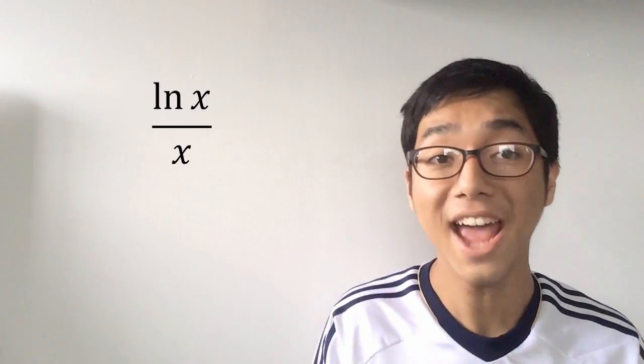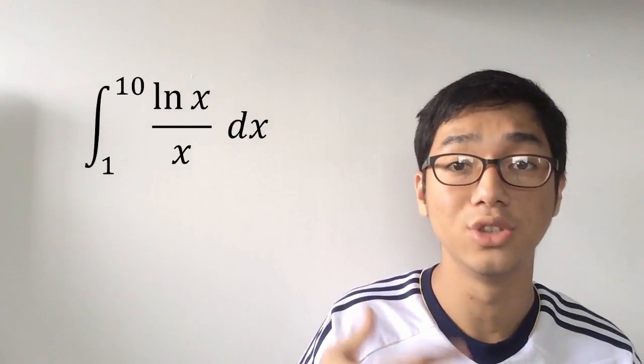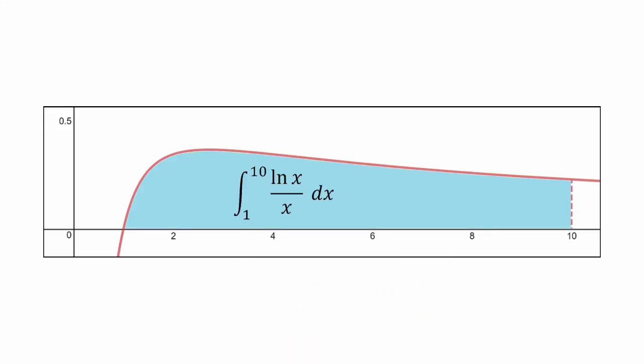Since integration is just finding the area under a graph, you can use this very same idea to numerically integrate a function with the Monte Carlo method. Let's say we have some function that we want to integrate — something like natural log of x divided by x — and you want to integrate this from 1 to 10. This particular problem can actually be solved analytically using calculus. However, for this video, we're more interested in the numerical solutions, so let's try to solve it using the Monte Carlo method. The graph of this equation actually looks a bit like this, and this is the area under the graph that we're interested in.